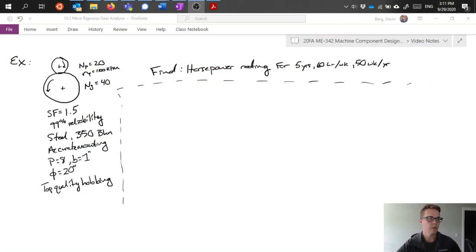In the problem we have a setup with two gears, a gear and a pinion coming together. I've already prescribed some of the setup stuff here. The pinion has 20 teeth, it's rotating at 1100 rpm. The gear has 40 teeth.